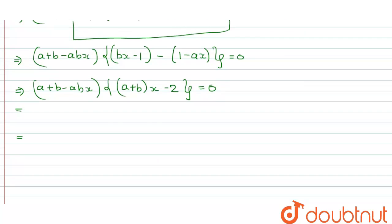So equate first to this and first to this. All right. So once you do it, you will be getting a plus b minus abx is equals to 0.